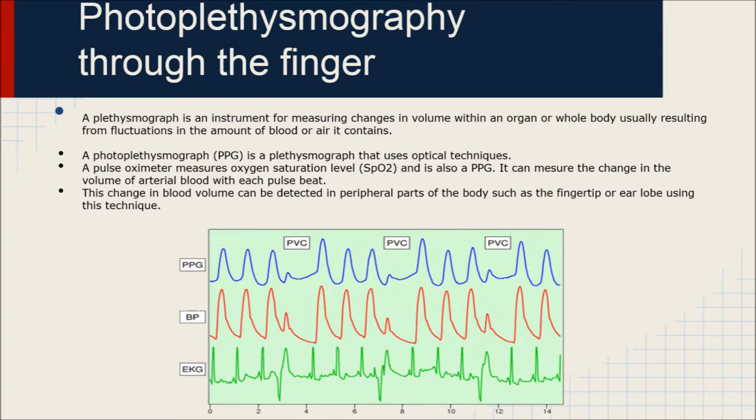A photoplethysmograph is a plethysmograph that uses optical techniques. A pulse oximeter measures oxygen saturation levels and is also a PPG. It can measure the change in the volume of arterial blood with each pulse beat. This change in blood volume can be detected in peripheral parts of the body such as the fingertips or earlobes using this technique.